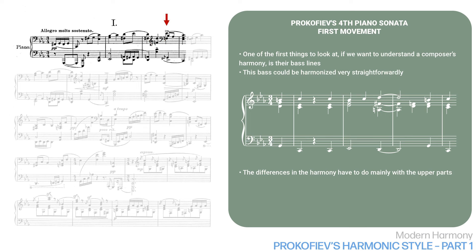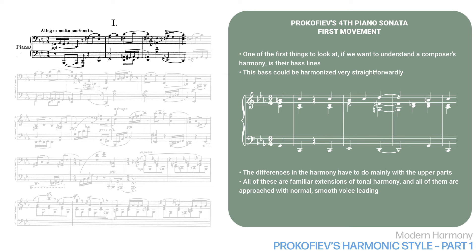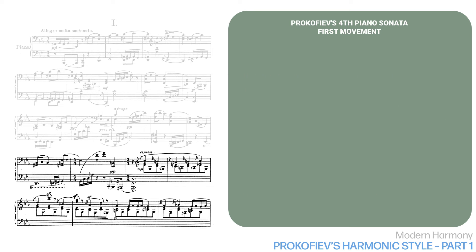When the dominant does arrive, it's preceded by an F-sharp appoggiatura, and it contains a flat leading tone, B-flat, and an E-flat — rather like an augmented dominant chord, but with the seventh still present. All of these are familiar extensions of tonal harmony, and all of them are approached with normal, smooth voice leading.